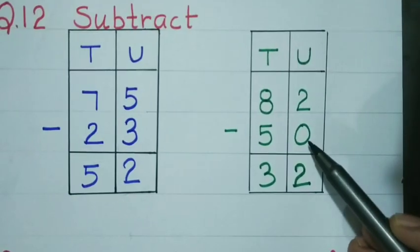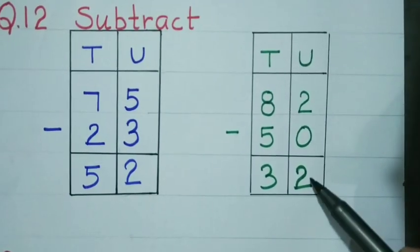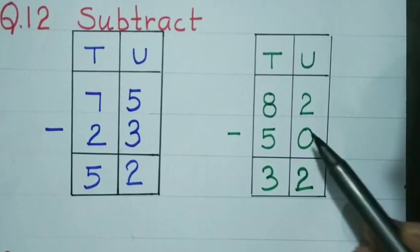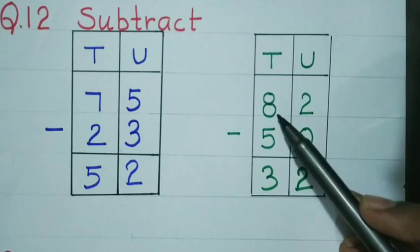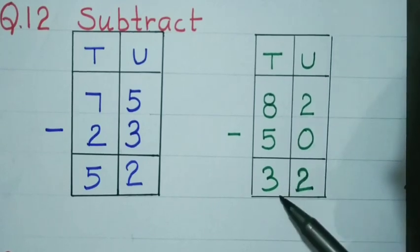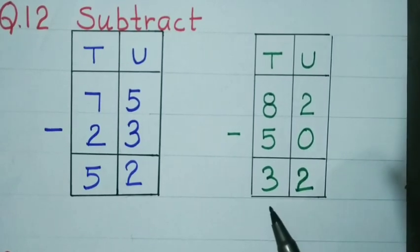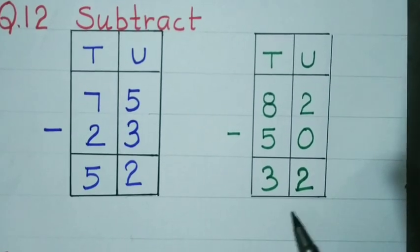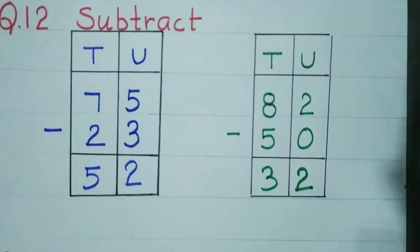2 minus 0 gives 2. 8 minus 5 gives 3. So 32 is the answer.